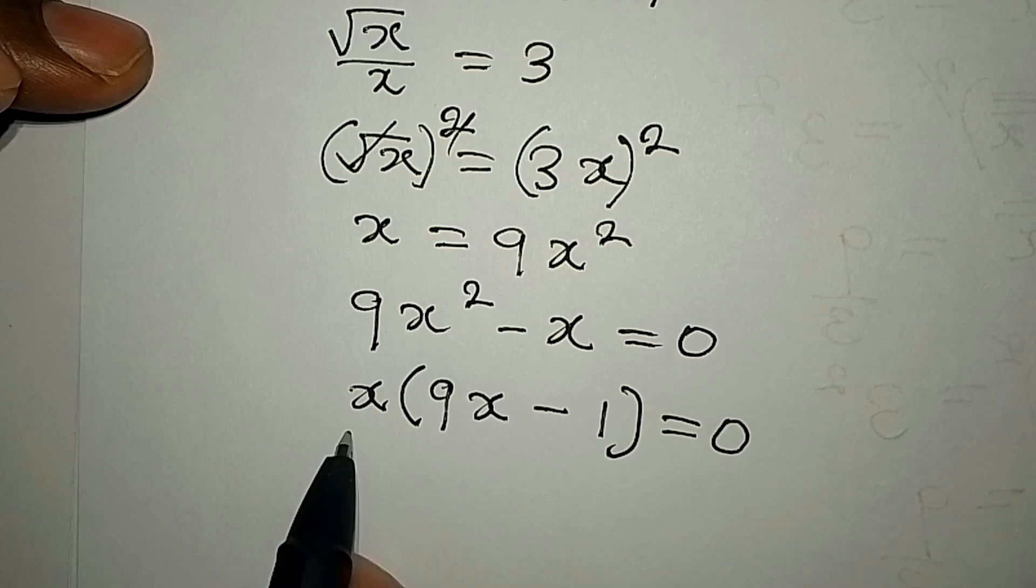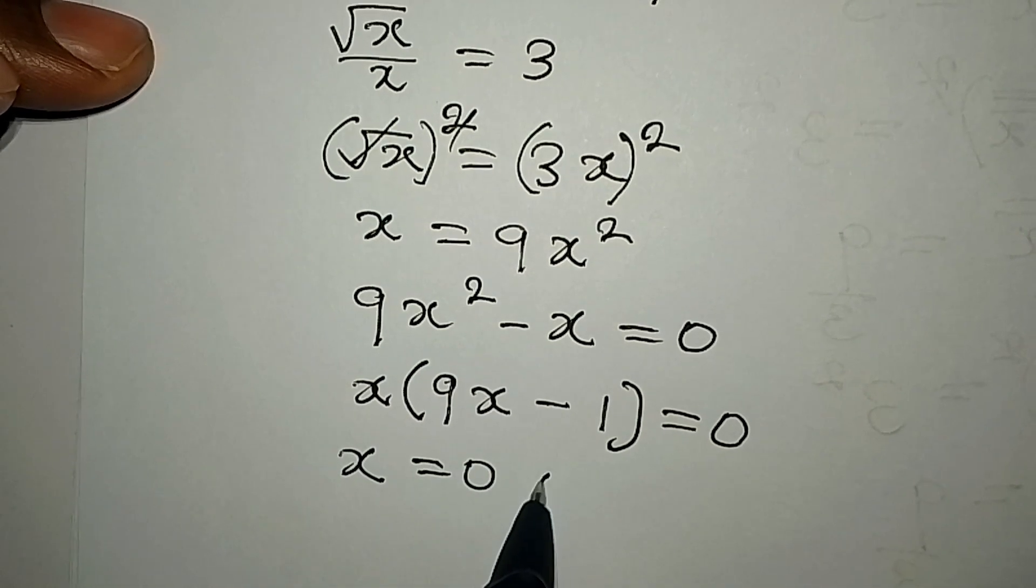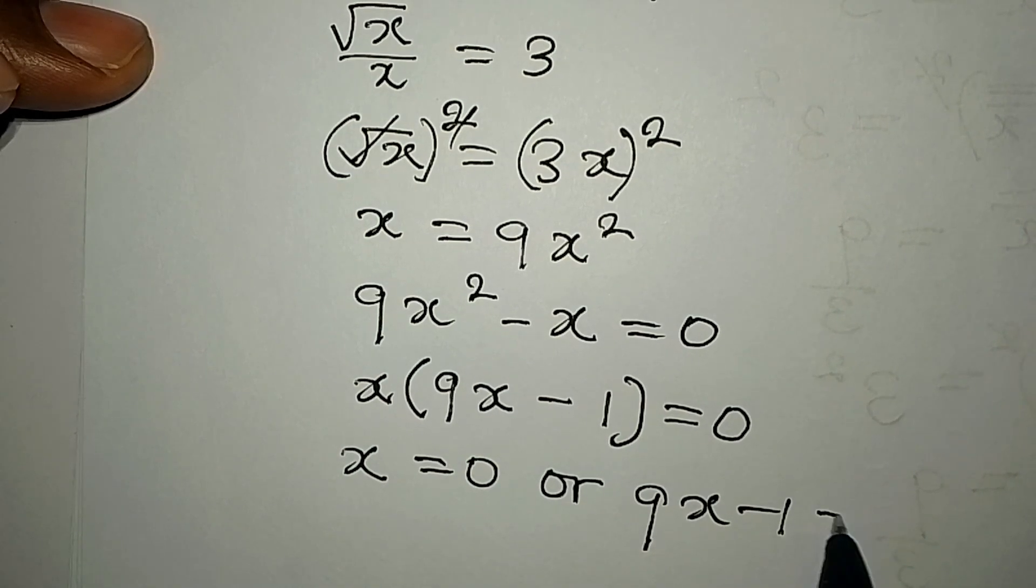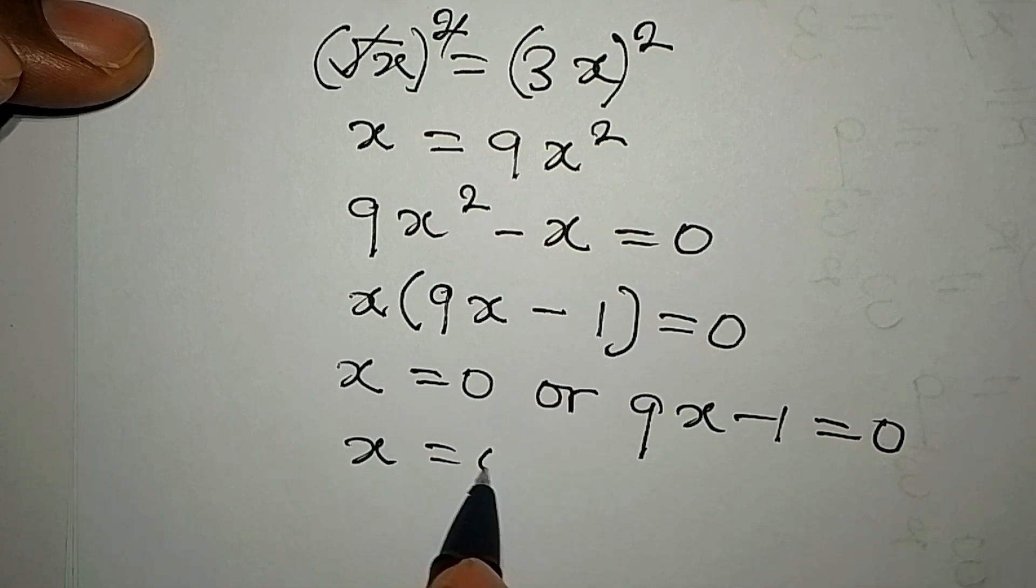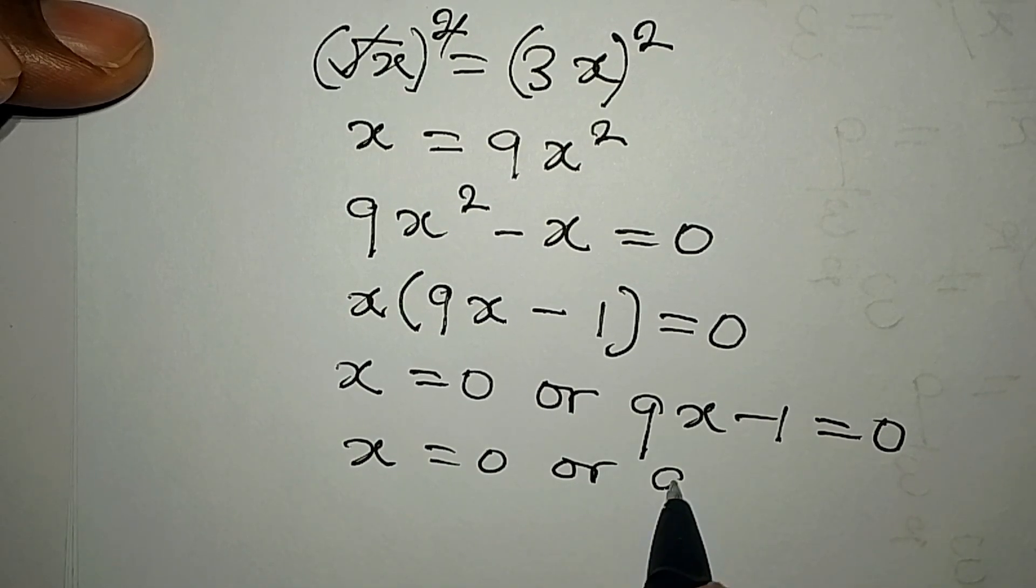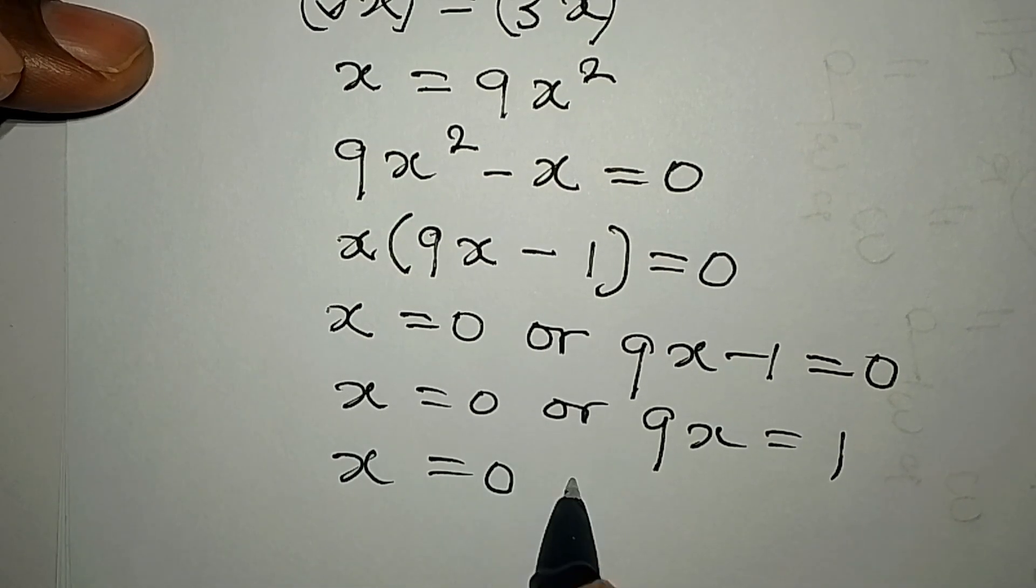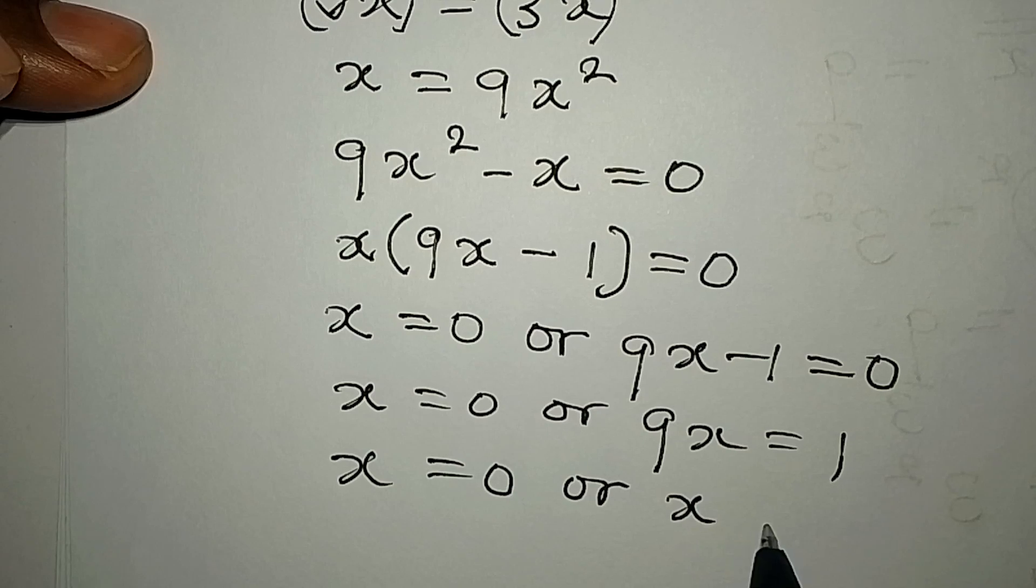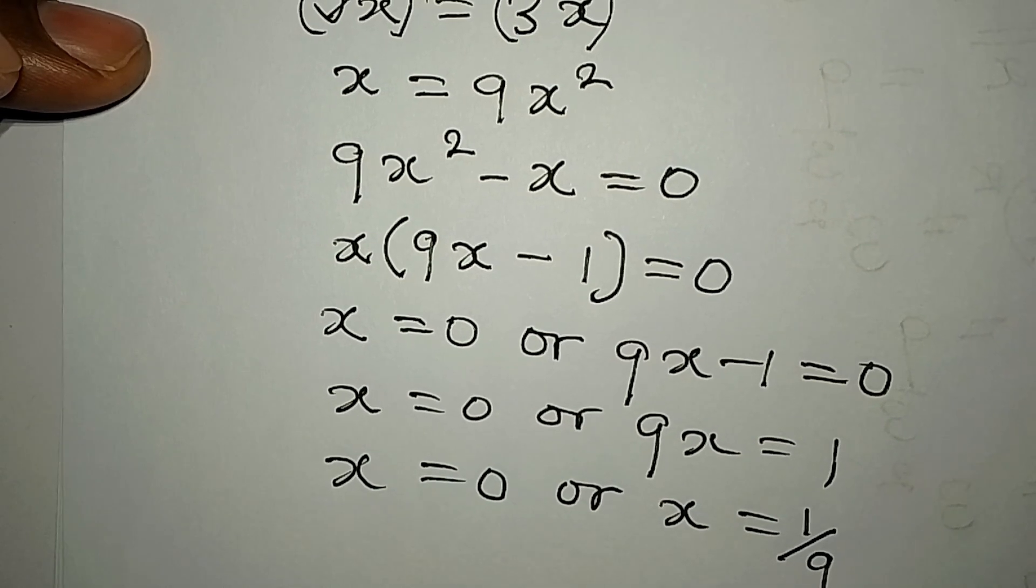From here we can say that it's either x is equal to zero, or 9x minus 1 is equal to zero. So x here is equal to zero, or 9x is equal to 1. Then x remains zero, or we can divide by 9 so we get 1 over 9.